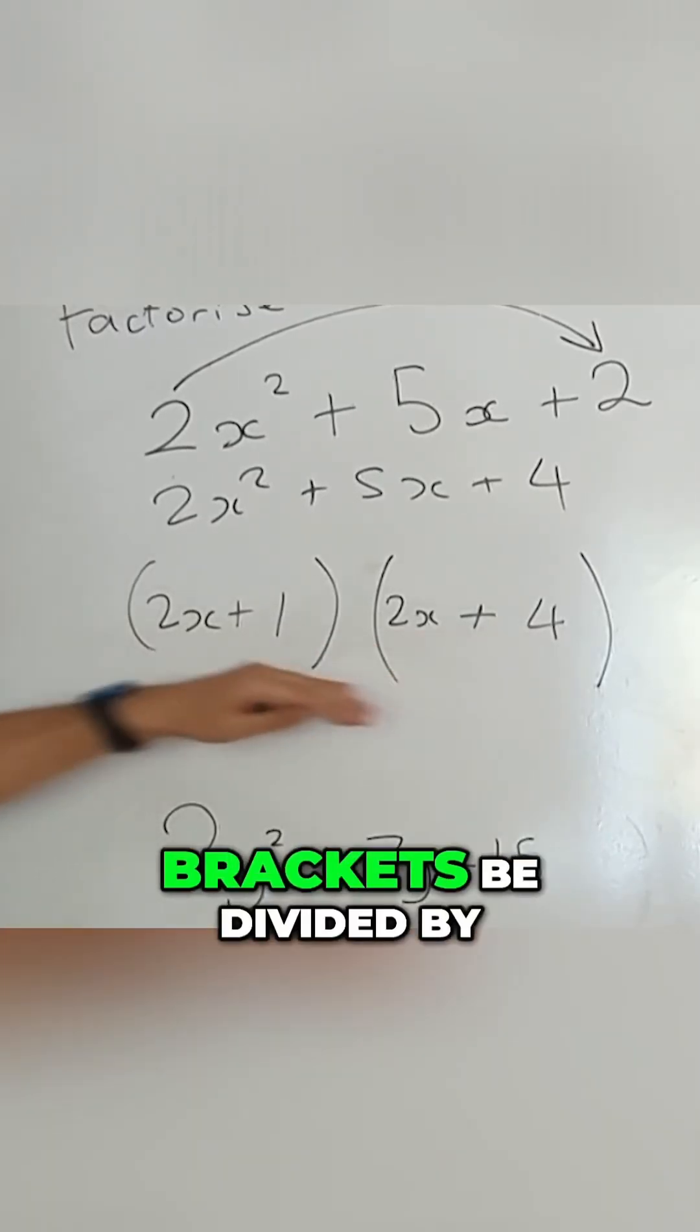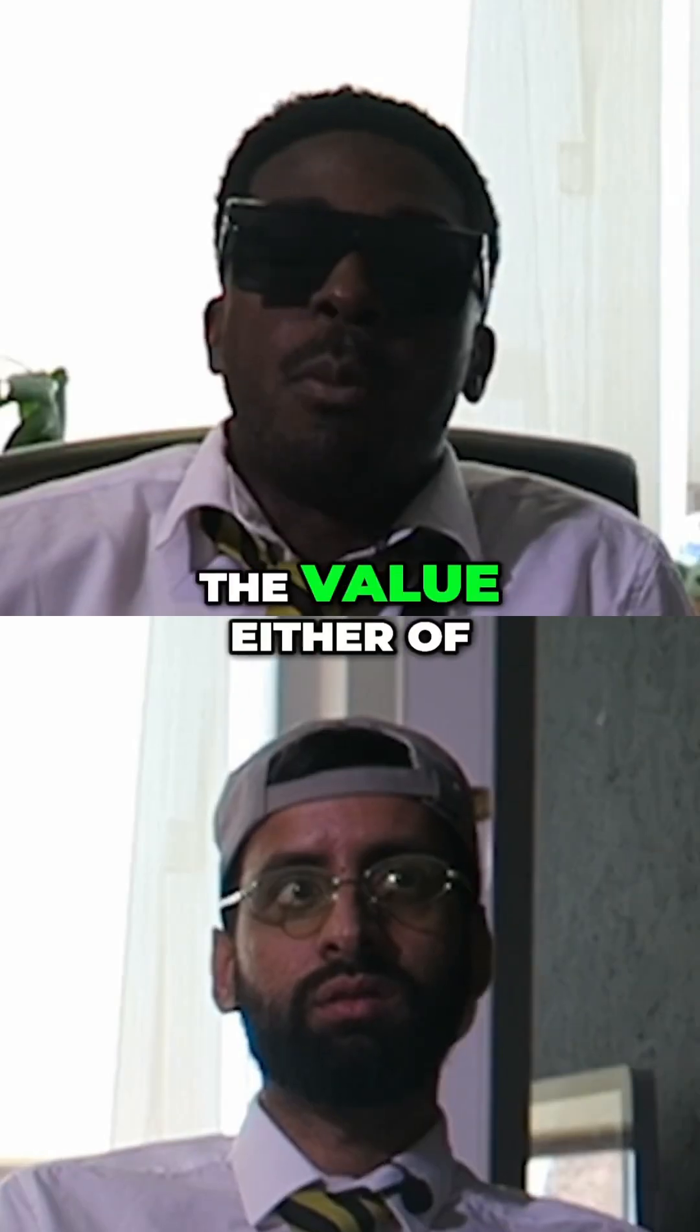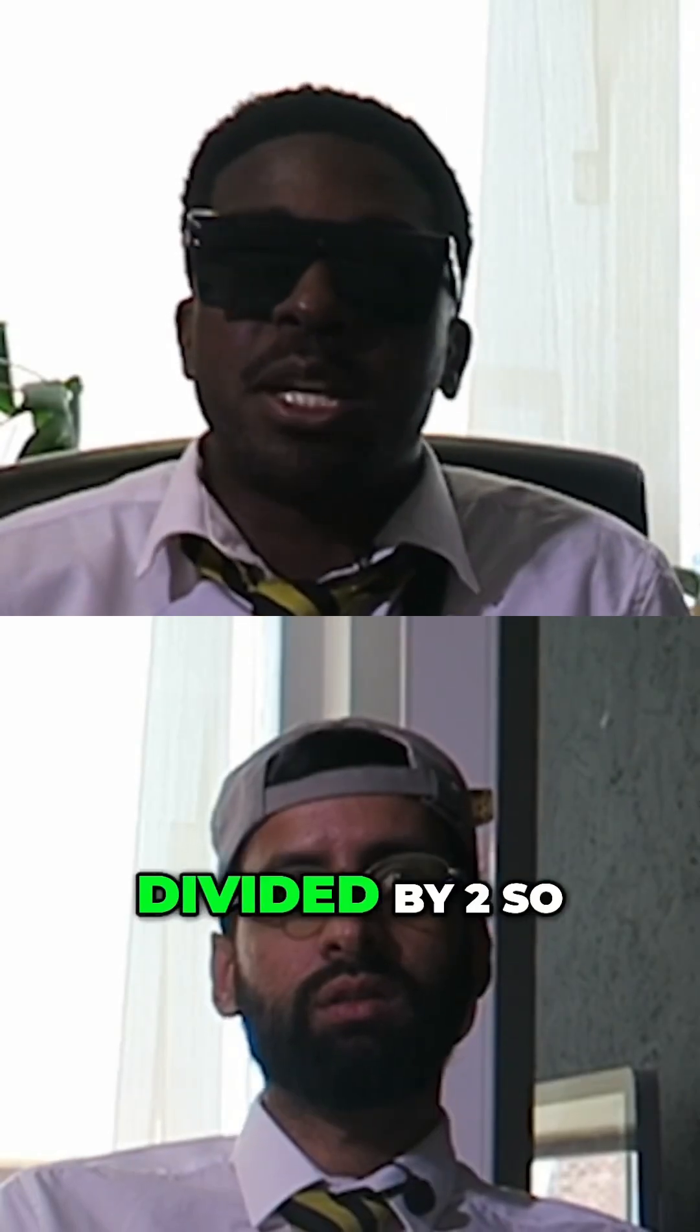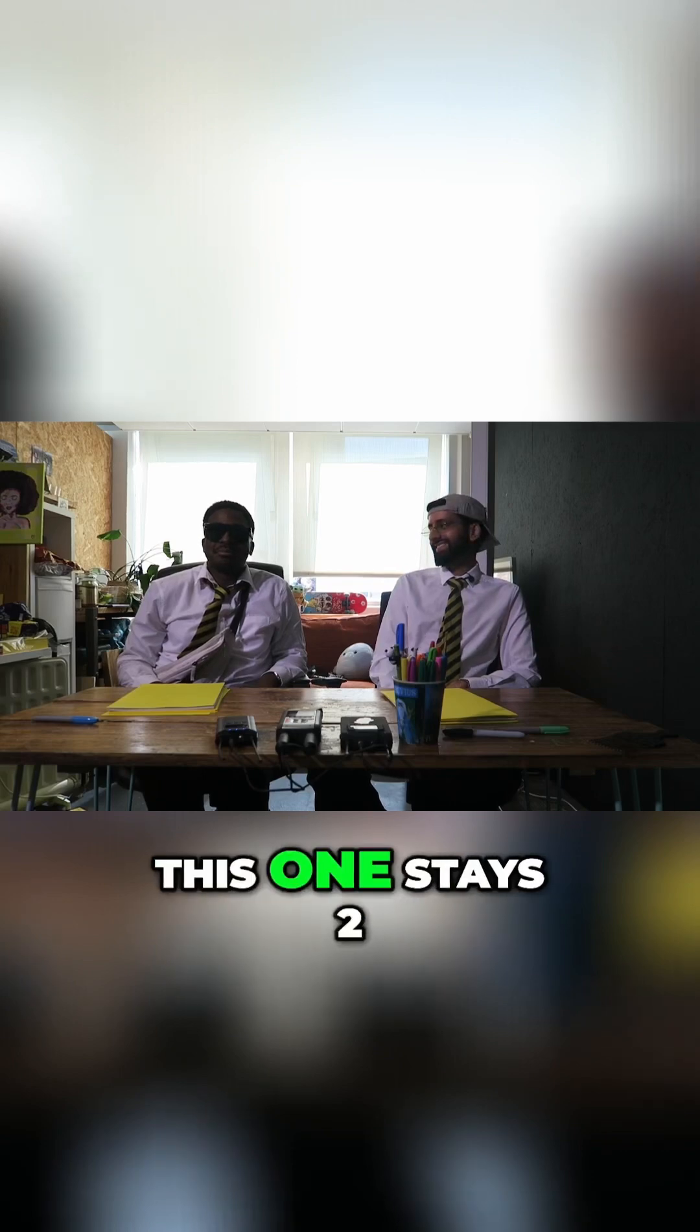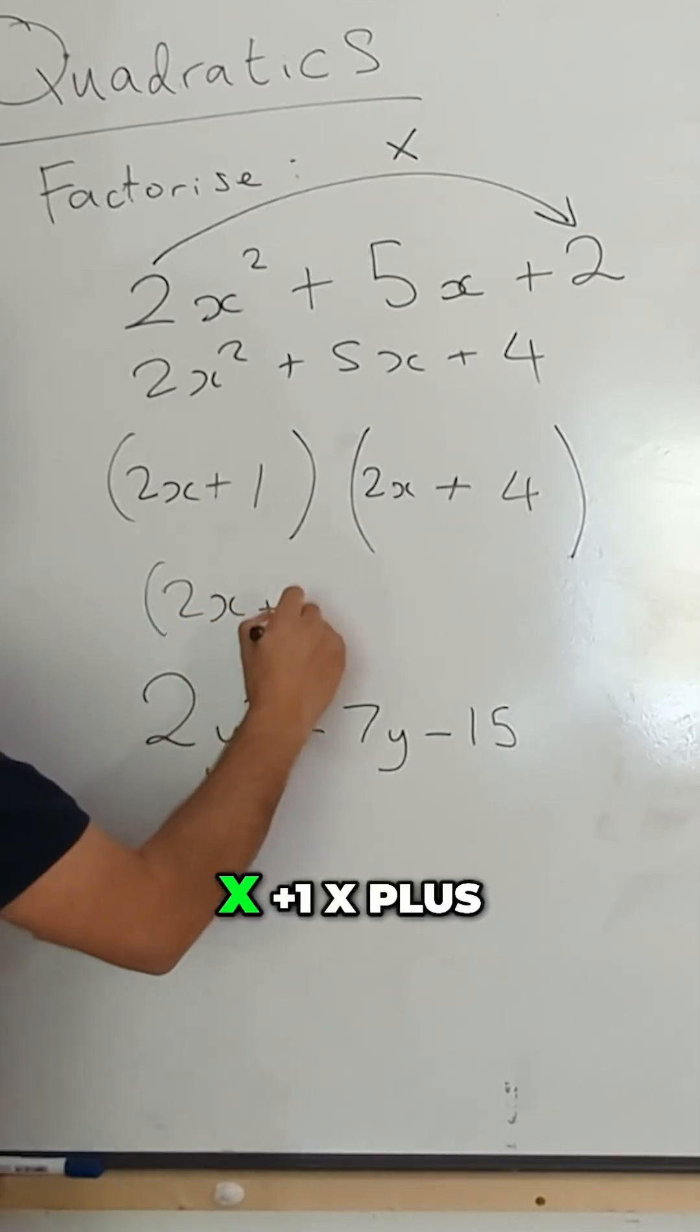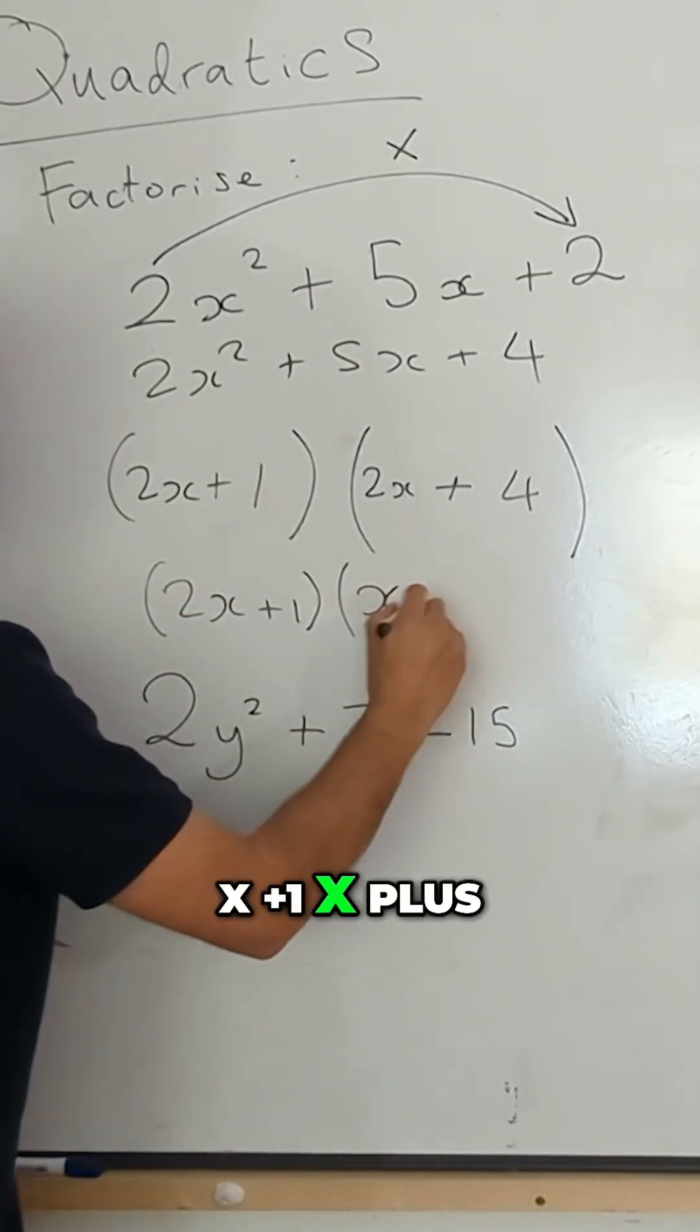So can either of these brackets be divided by something, in terms of the value of either of them? The one on the right can be divided by two. So we do divide it by two. That's the way it works. So this one stays 2x plus 1, x plus 2.